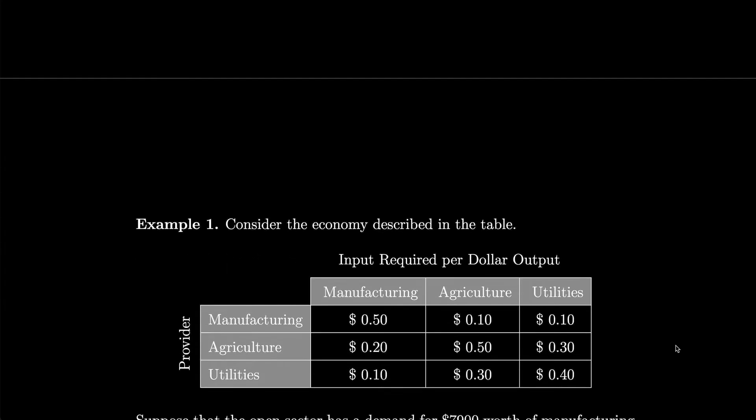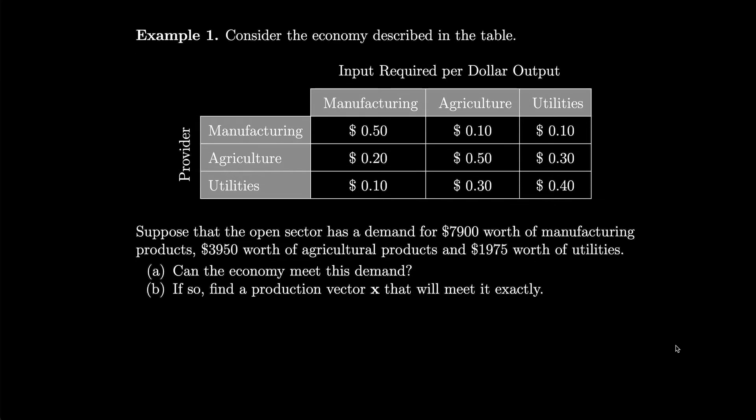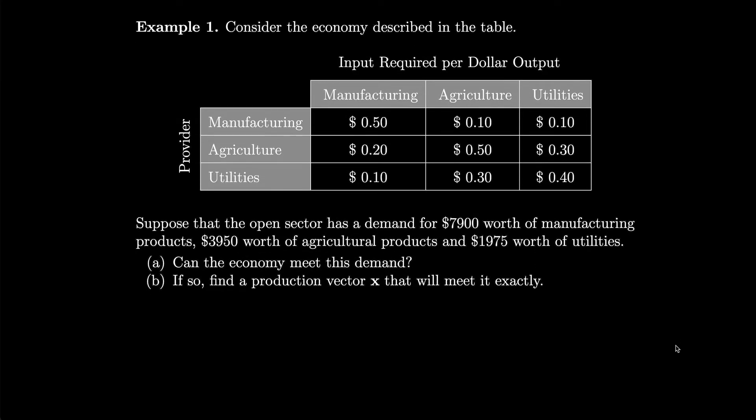Let's do an example. Consider the economy described in the table. We have the provider: manufacturing, agriculture, and utilities, and we have the input required per dollar output. Suppose that the open sector has a demand for $7,900 worth of manufacturing products, $3,950 worth of agricultural products, and $1,975 worth of utilities. Can the economy meet this demand? And if so, find a production vector x that will meet it exactly.